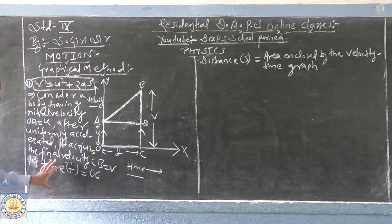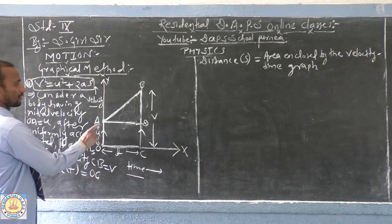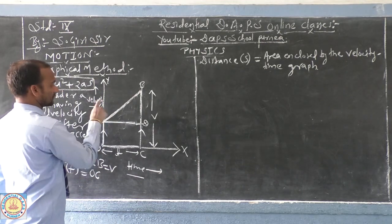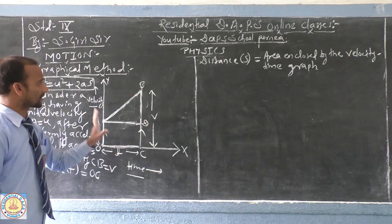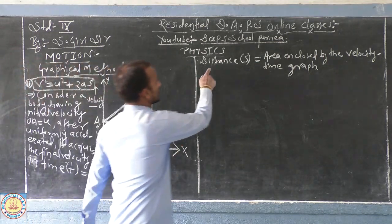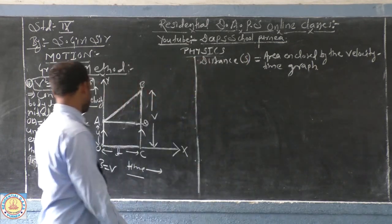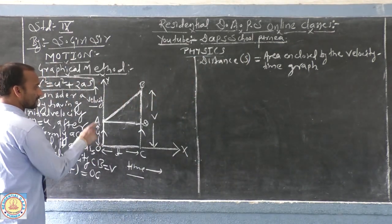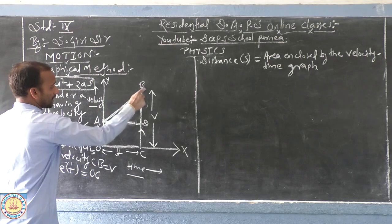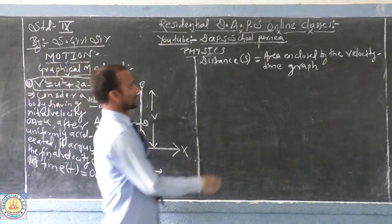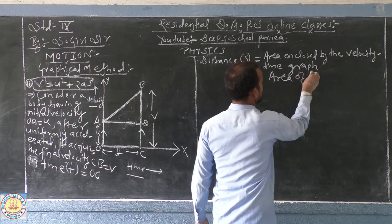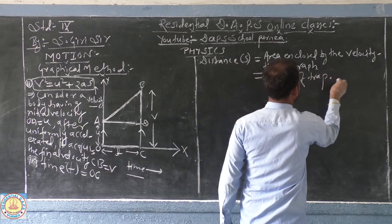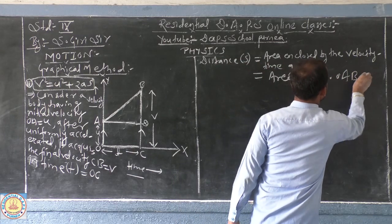Using the same graph, OA equals u. After uniform acceleration, the body acquires final velocity v in time t. The total distance s is the total area enclosed by the velocity-time graph OABC, and OABC is exactly a trapezium.